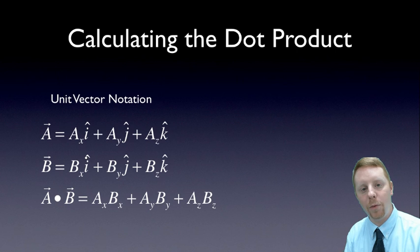And if you define B the same way, then the dot product of the two is quite simply the product of their x components added to the product of their y components added to the product of their z components.